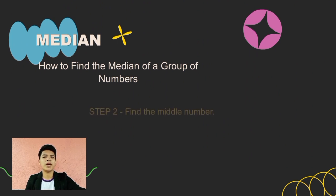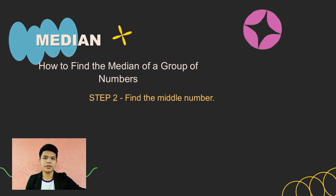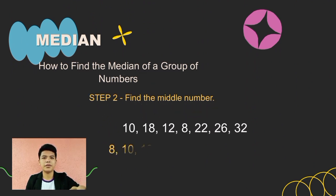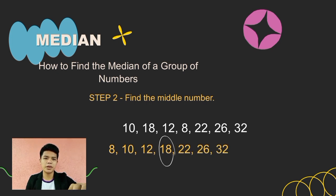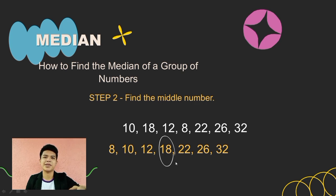The next step is to find the middle number. We have the arranged numbers, and we need to find the middle: 1, 2, 3, 4, 5, 6, 7. Since there are 7 numbers, the middle number is 18. So 18 is our median.